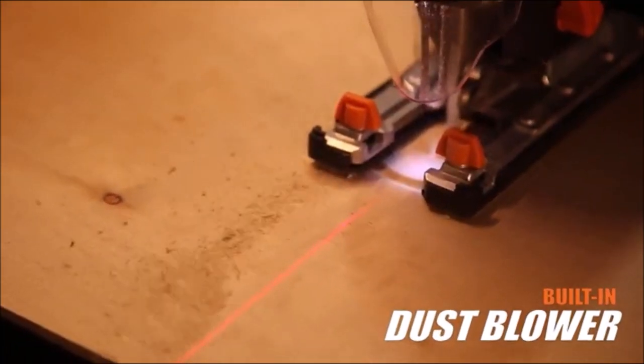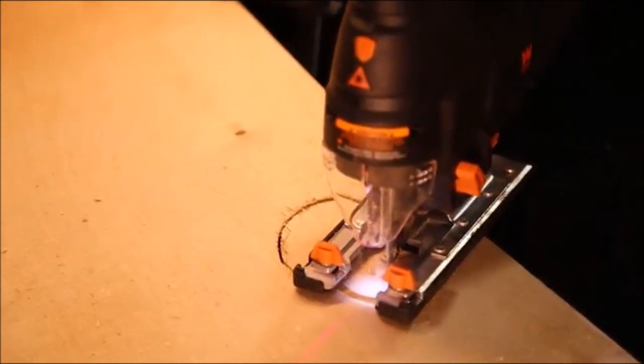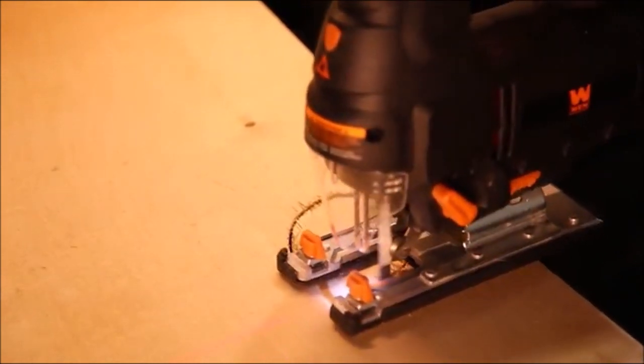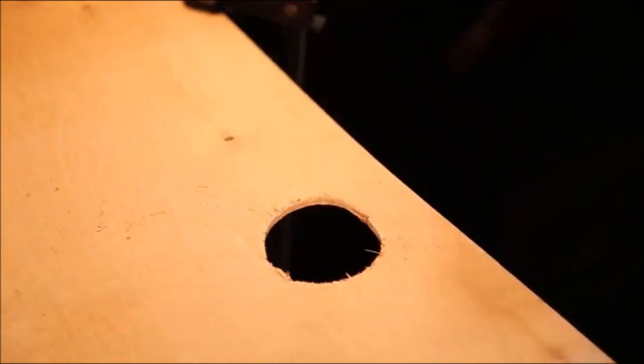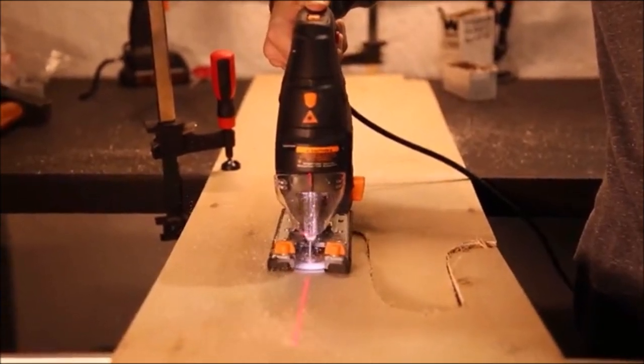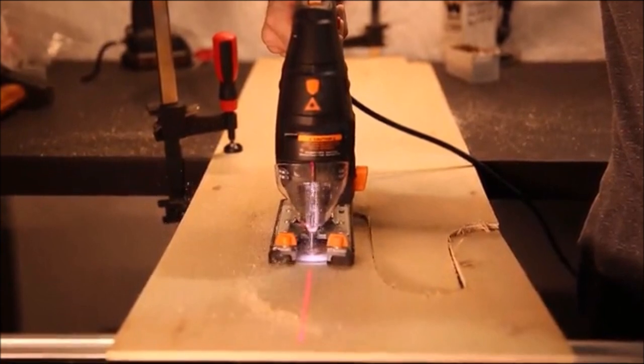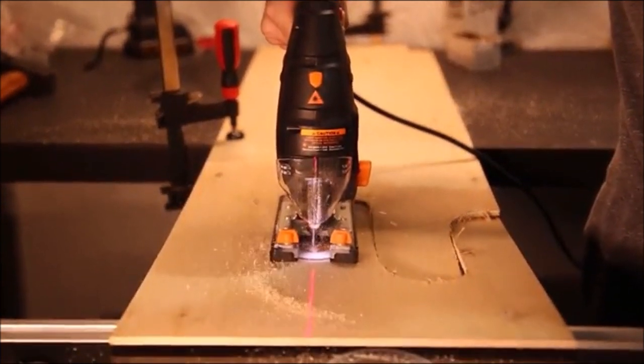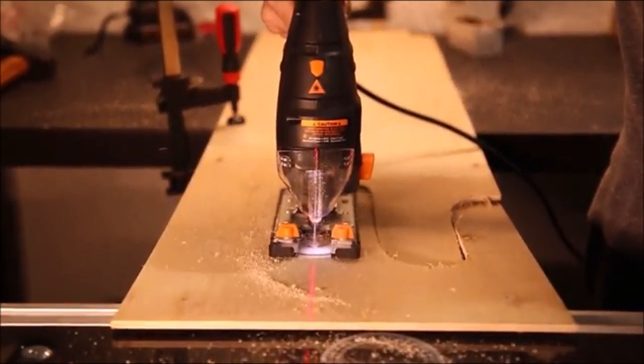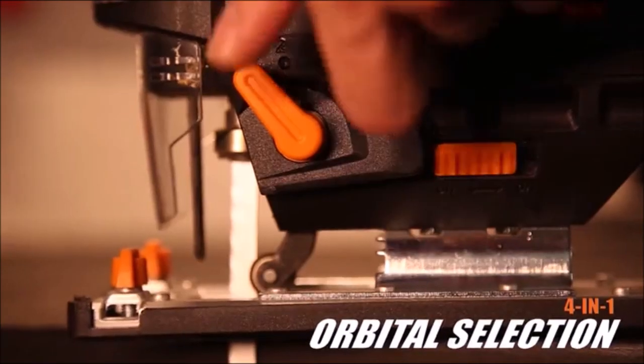The orbital selection knob helps adjust the strength of the blade to match the density of the cutting material. Simply turn the knob to change the stroke from vertical to orbital, creating a pendulum effect with the saw's blade. Easily bevel the bottom footplate up to 45 degrees in either direction for angled cuts in your workpiece.